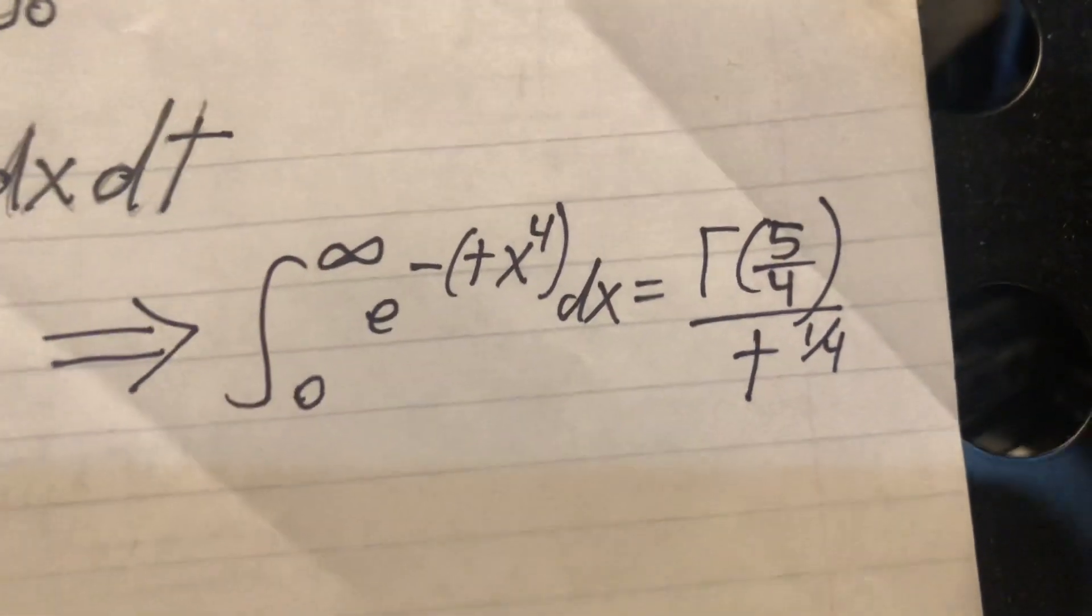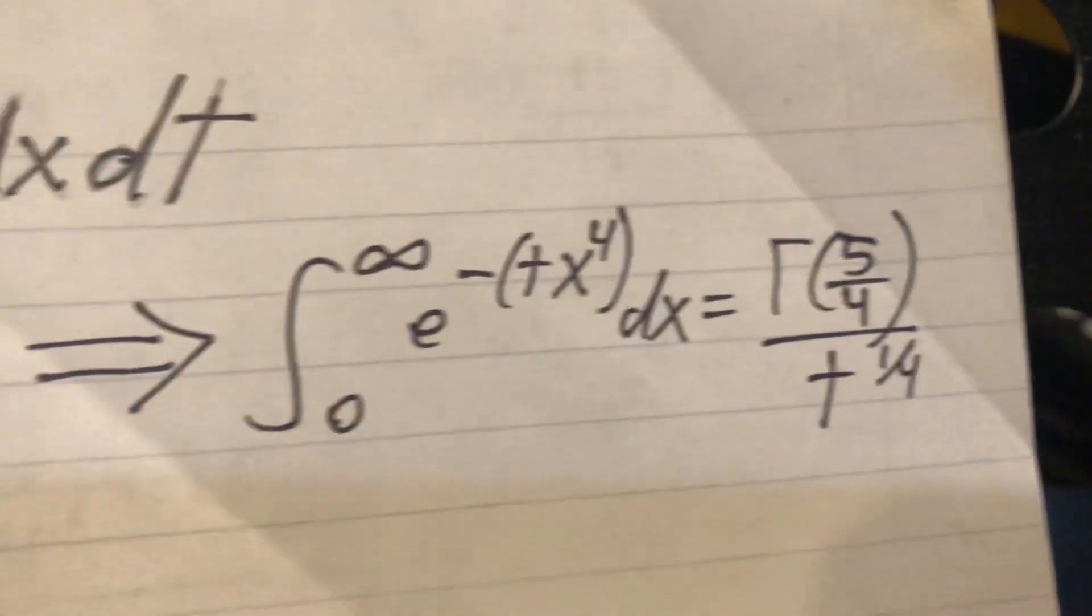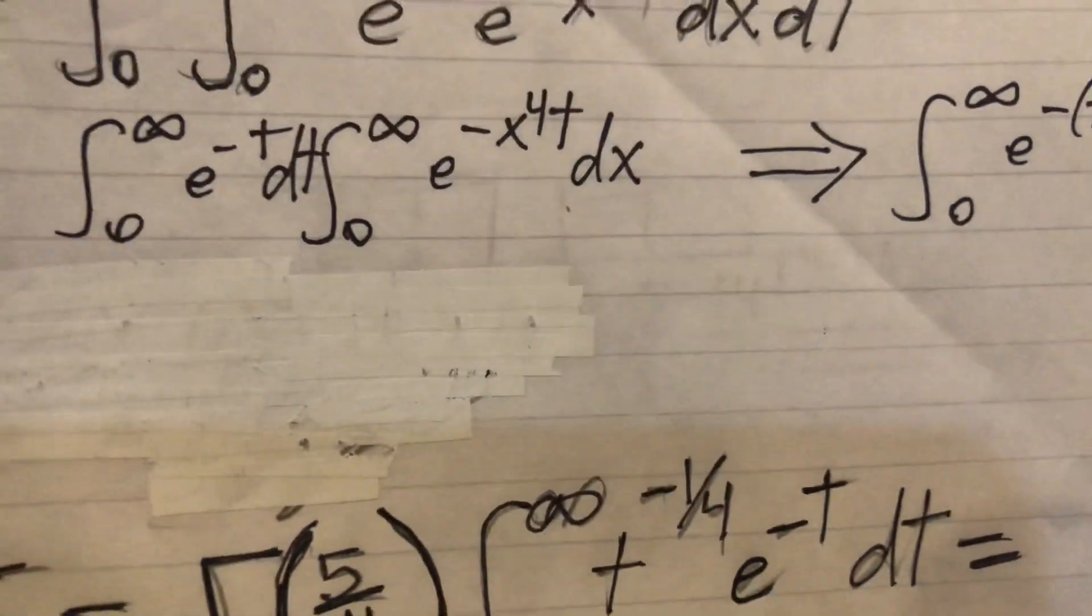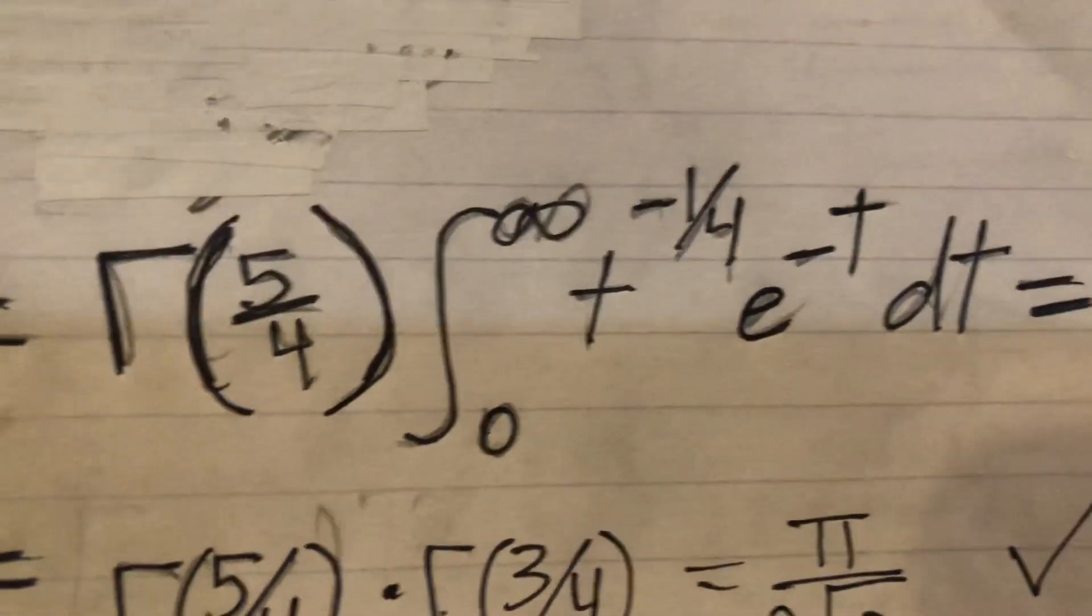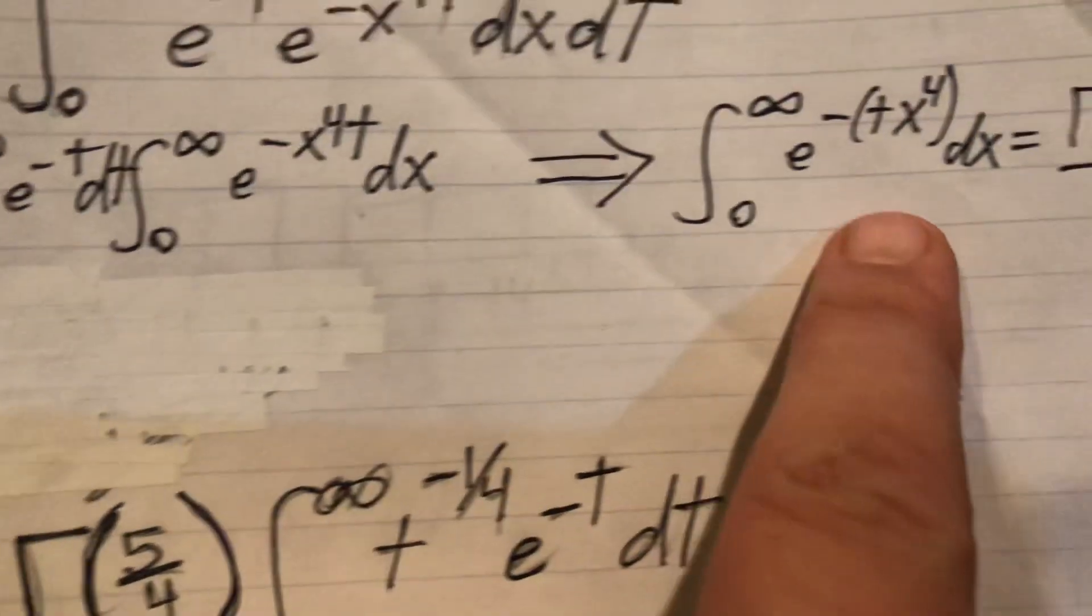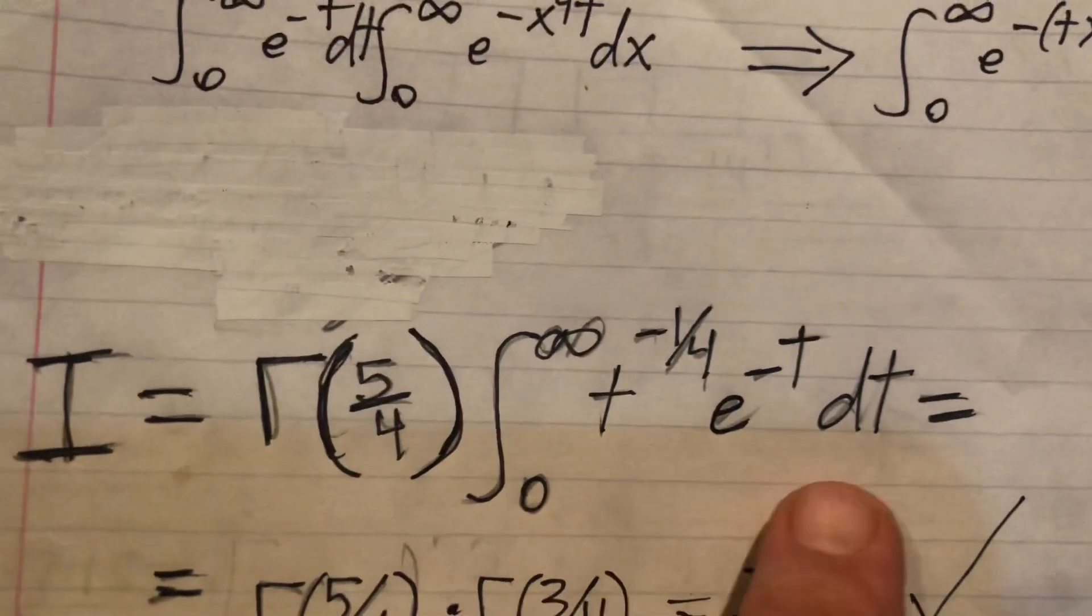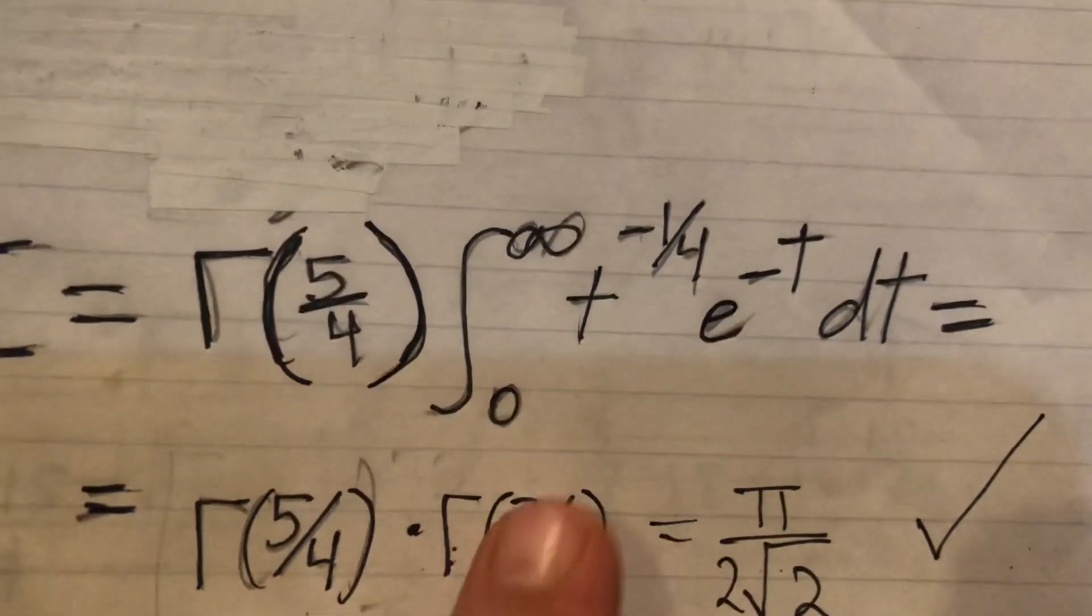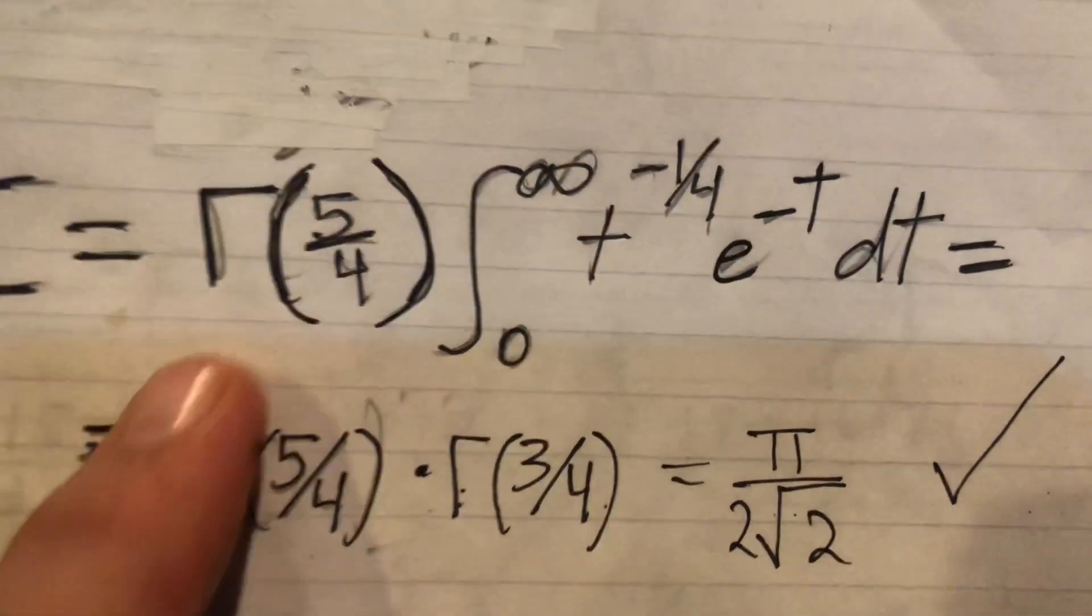And we get the integral from zero to infinity of e to the minus tx to the fourth dx equals the gamma function of 5/4 over t to the quarter power. So we bring that gamma of 5/4 out front, and we have that e to the minus t from before. Now this looks familiar - this looks like a gamma function, which it is. So this equals the gamma of 3/4.